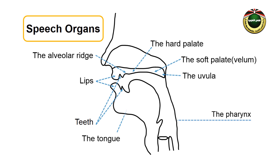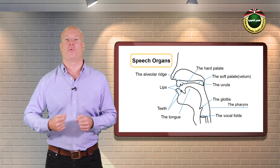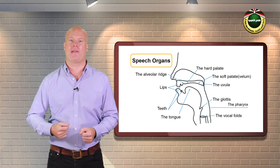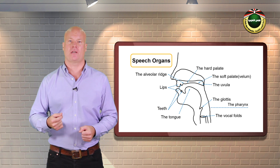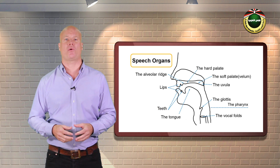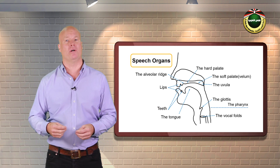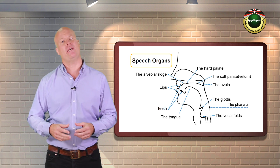the blade of the tongue, the tip of the tongue, the back of the tongue, the root of the tongue, the vocal cords, the glottis, the windpipe, and the larynx. Some of these organs are mobile and some are immobile.